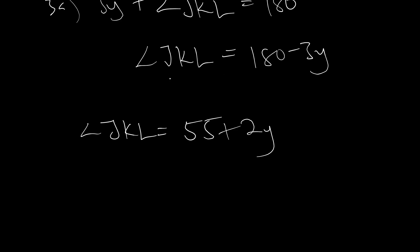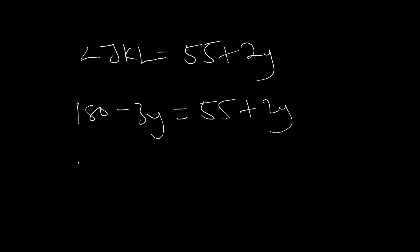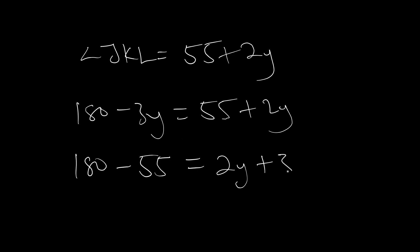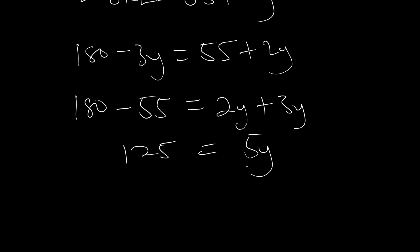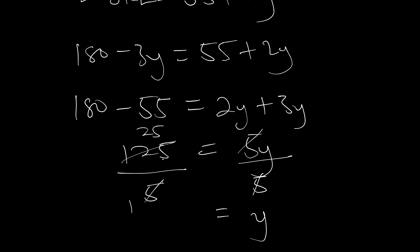Since angle JKL equals both expressions, we can say that 180 minus 3y is equal to 55 plus 2y. Grouping like terms: 180 minus 55 is equal to 2y plus 3y, giving us 5y equals 125. To make y the subject we divide both sides by 5, so y is equal to 125 divided by 5, which gives us 25.